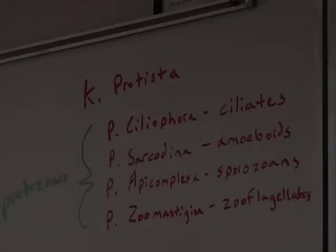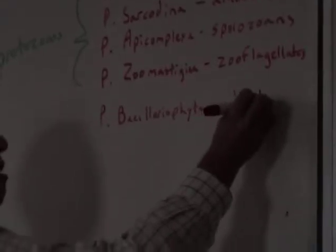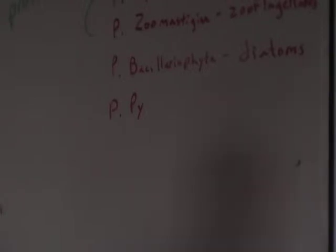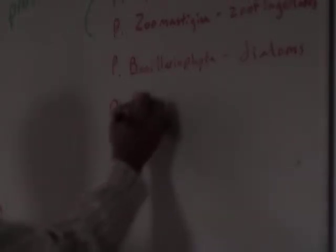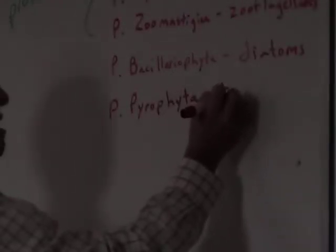Then you have your plant-like protists. Phylum Bacillariophyta — diatoms — those are the ones with the silica shells. Phylum Pyrophyta — dinoflagellates — those are your dinoflagellates.